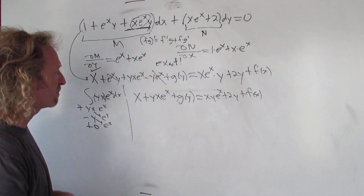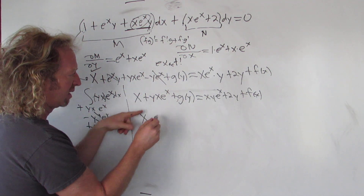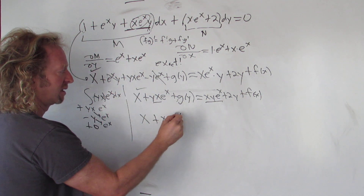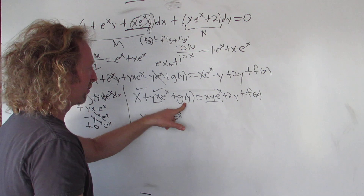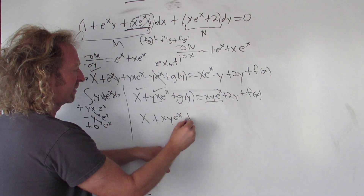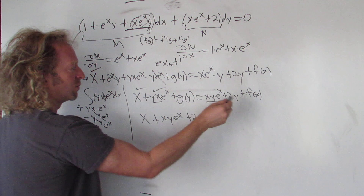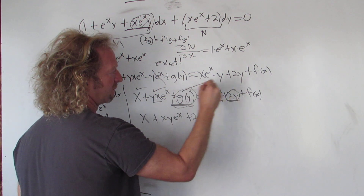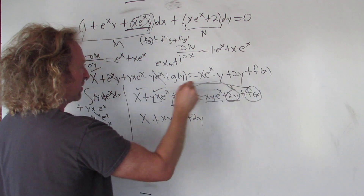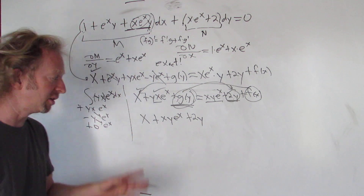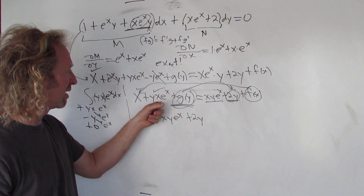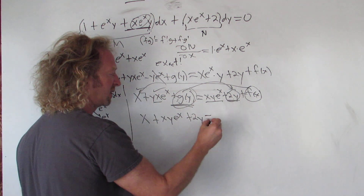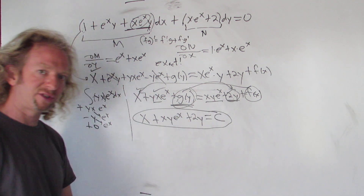Now we use matching. We have x — check, that's the same. We have x·y·eˣ — check, that's the same. The only thing different is the 2y over here. So g(y) must equal 2y and f(x) must equal x. Writing the solution: x + xy·eˣ + 2y = C. That is the implicit solution to the differential equation.